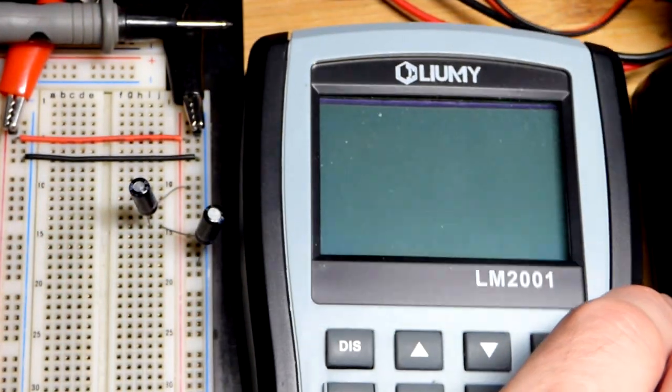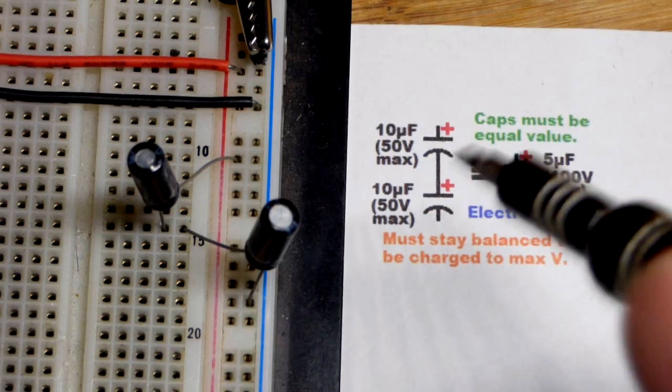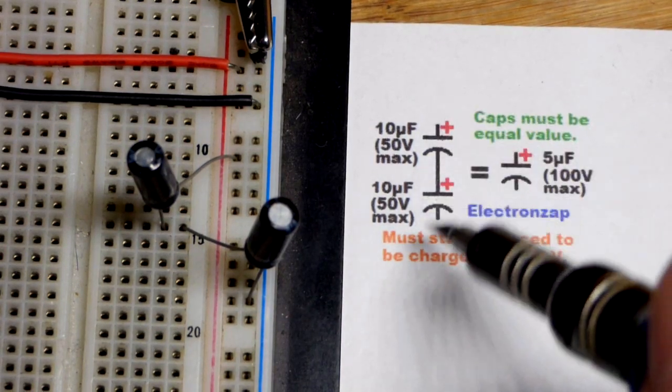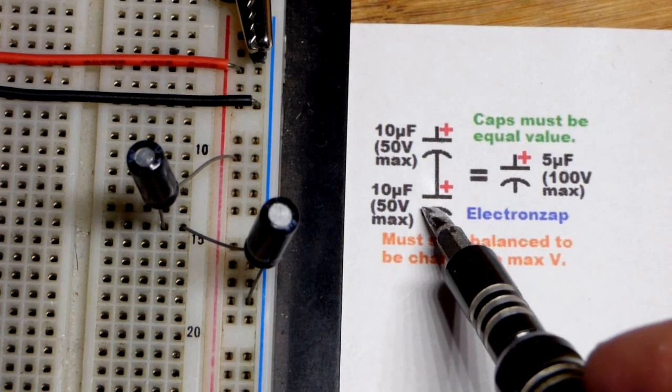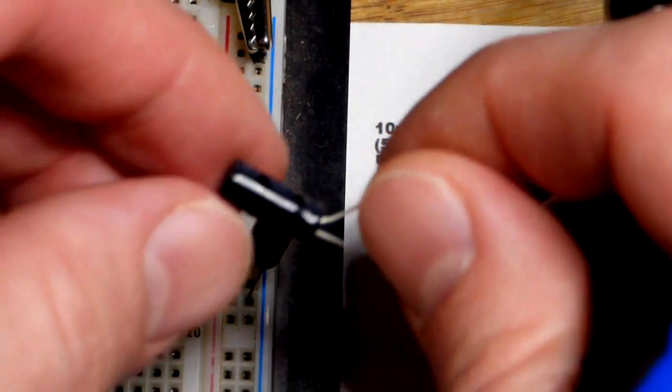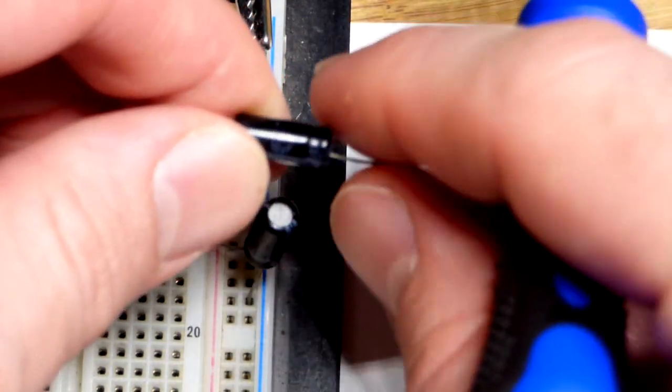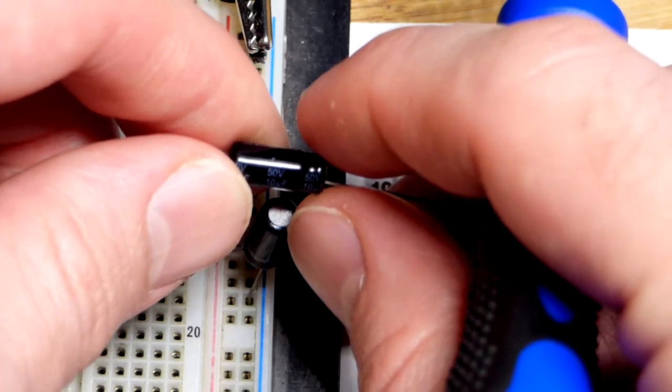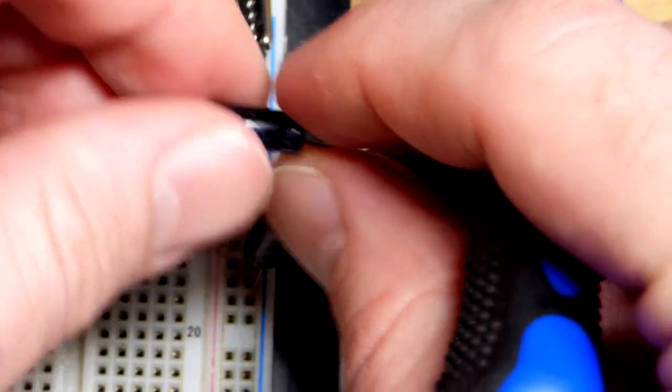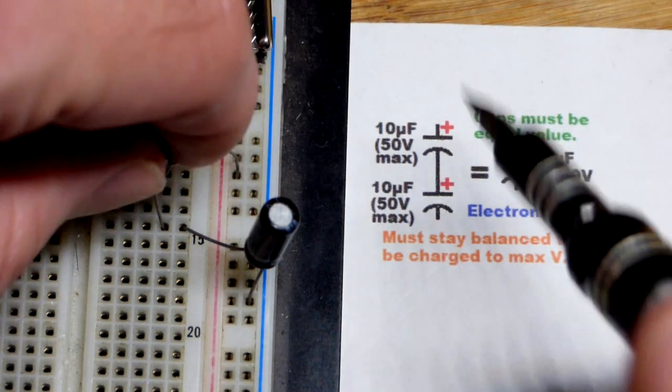In this schematic diagram you can see that we have two 10 microfarad capacitors in series. Their voltage is rated for 50 volts each. I don't know if we'll get that to show up or not, you might be able to see that down there, 50 volts. That's the voltage rating for each of them.